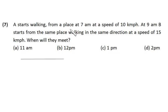A starts walking from a place at 7 a.m. at a speed of 10 km per hour. At 9 a.m., B starts from the same place walking in the same direction at the speed of 15 km per hour. When will they meet?